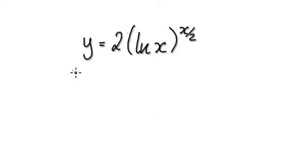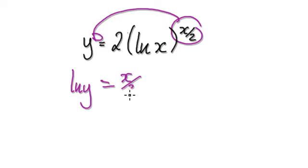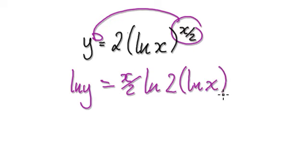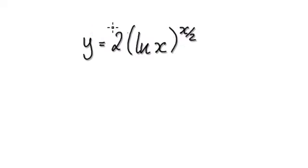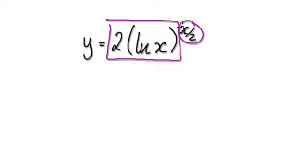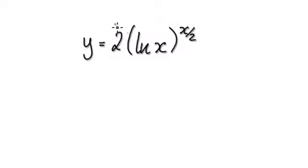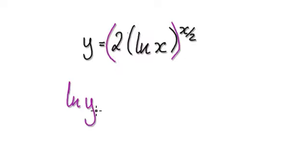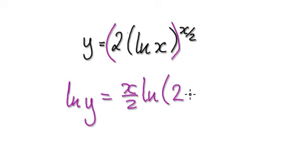Also, if you take the natural log of both sides, it's not simply a matter of moving the exponent down like this. It's not simply natural log of y equals x over 2 times natural log of 2, natural log of x. If you were given something like a bracket to the power of a bracket, then you can do that — natural log of y equals x over 2 times natural log of 2.